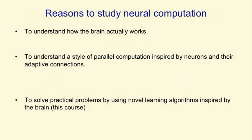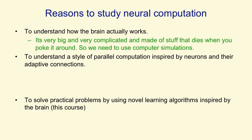There are several different reasons to study how networks of neurons can compute things. The first is to understand how the brain actually works. We might think we could do that just by experiments on the brain, but it's very big and complicated, and it dies when you poke it around, so we need to use computer simulations to help us understand what we're discovering in empirical studies. The second is to understand a style of parallel computation inspired by the brain, which can compute with a big parallel network of relatively slow neurons. If we can understand that style of parallel computation, we might be able to make better parallel computers.